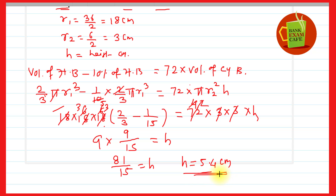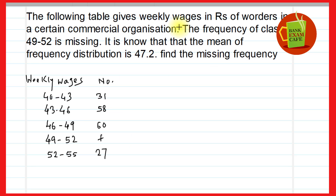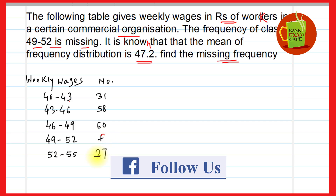We have got the height of the cylindrical bottle as 5.4 cm. This is a very different type of question, so put a hashtag mark so you will revise it again. Moving to the next question: the following table gives weekly wages in rupees of workers in a certain commercial organization. The frequency of class 49 to 52 is missing, and it is known that the mean of the frequency distribution is 47.2. Find the missing frequency.